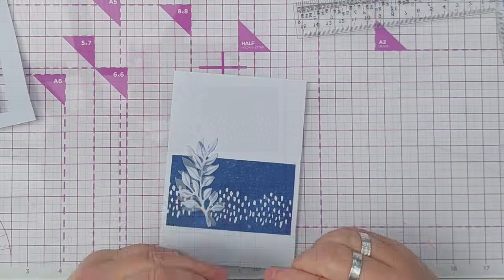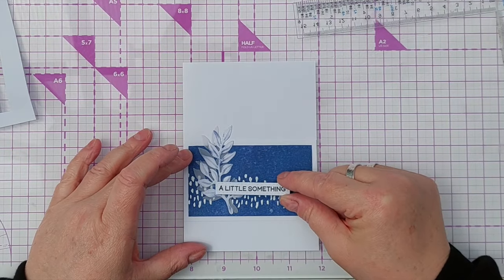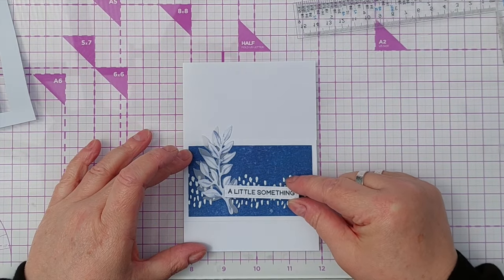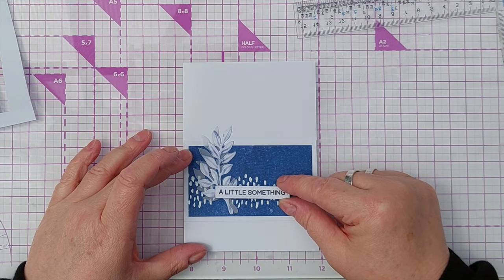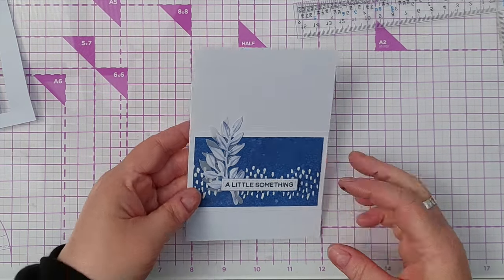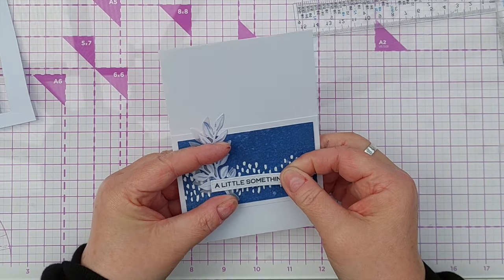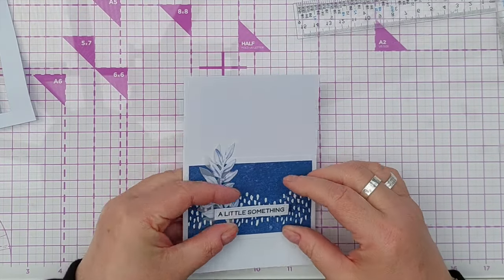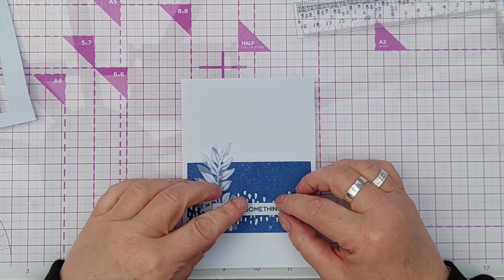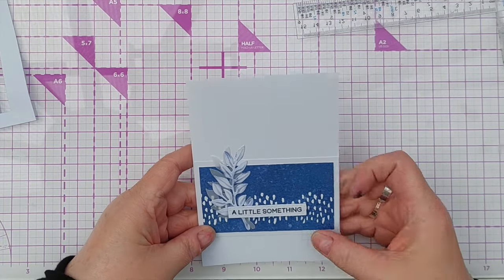For my sentiment I chose a stamp that said 'a little something,' so this card can be used for pretty much any occasion I think. I stamped it on white cardstock and cut it out with a stitched rectangle die.